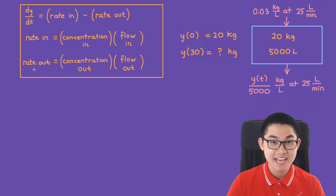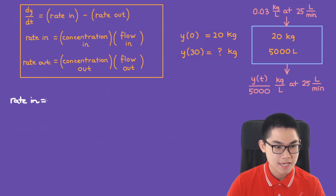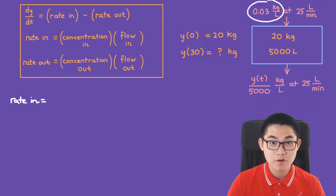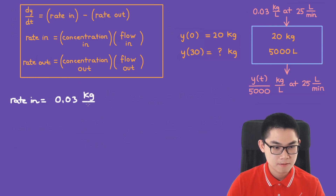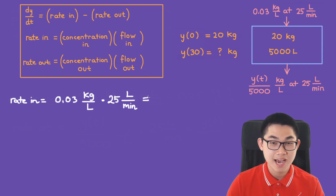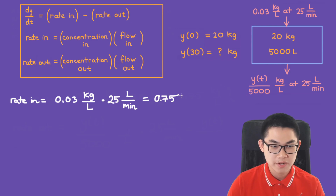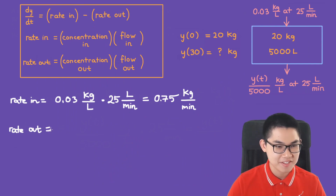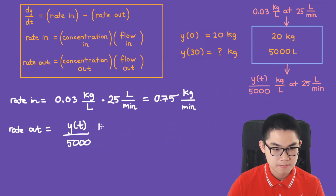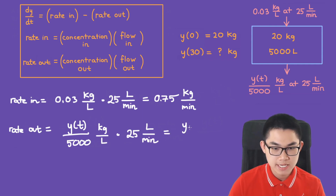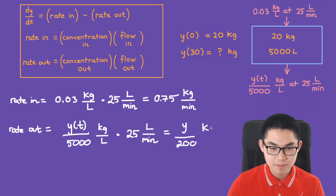Step 1 is to find rate in and rate out. Rate in equals concentration in, which is 0.03 kilograms per liter, times flow in, which is 25 liters per minute. That gives 0.75 kilograms per minute. Rate out is concentration out — y(t) over 5000 — times flow out, which is 25 liters per minute. This gives y(t) over 200 kilograms per minute.